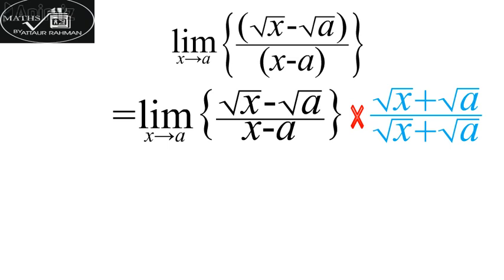Now here in the numerator, we will make use of the formula: (a + b)(a - b) = a² - b².